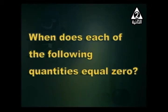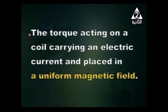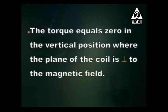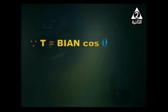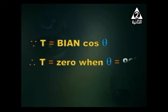Another type of question: 'When does each of the following quantities equal zero?' — Torque acting on a coil carrying an electric current placed in a uniform magnetic field. The torque equals zero in the vertical position, where the plane of the coil is perpendicular to the magnetic field. The expression for torque is BIA·cosθ, where θ is the angle between the plane and the field. When θ = 90°, cosine 90° = 0, so torque = 0.